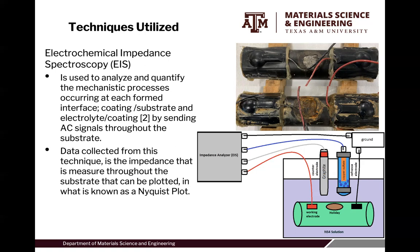We have our counter electrode, which is graphite, our reference electrode, which is copper sulfate, and we also have our ground. Here's a representation of how these pipes look with a holiday in them. We have one that doesn't have any corrosion yet, and then we have one that has severe corrosion in it. We want to be able to detect these types of defects without having to pull them out or go out in the field and disturb the setup they're in.